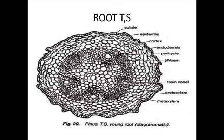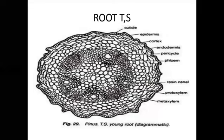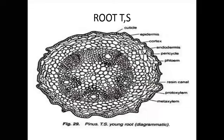The endodermal cells are filled with starch. On this endodermis, casparian strips are clearly visible. Casparian strips means the scientist Casparian identified a starch sheath around the endodermal cells. So these sheaths are called casparian sheaths, and they are also present in the endodermis.